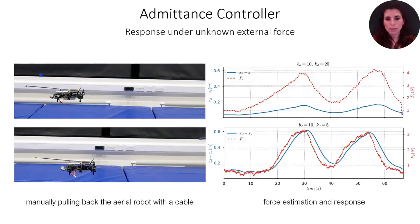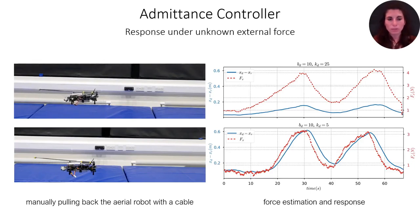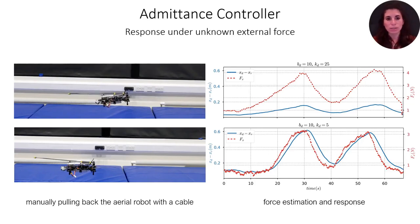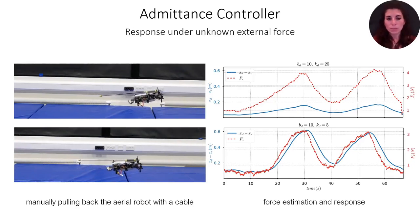The interaction part of the operation is controlled by an admittance controller on board. In these videos, we can see the quadcopter performing experiments on the admittance controller indoors. The drone is manually pulled backwards by a cable. In the top plot, we can see how the force and the position diverge since the admittance controller is switched off. However, as we switch on the admittance controller, in the bottom video, we can see how the two curves merge.